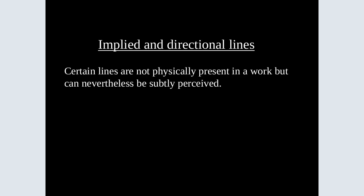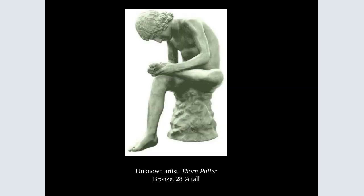Implied and directional lines — certain lines are not physically present in a work, but can nevertheless subtly be perceived. This is a great example of an implied line that doesn't exist. His eye is looking at his foot, and there's this implied line happening. The sculpture is pulling a thorn out of its foot, so you can use those implied lines within your work.